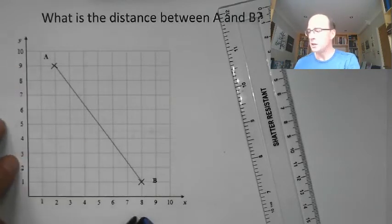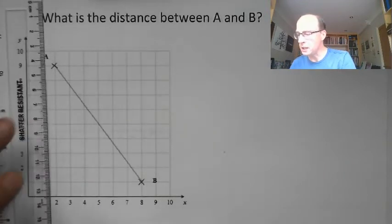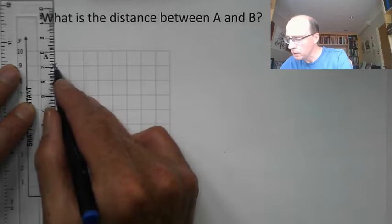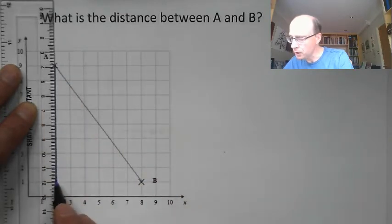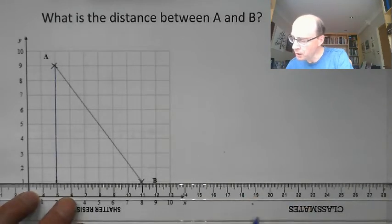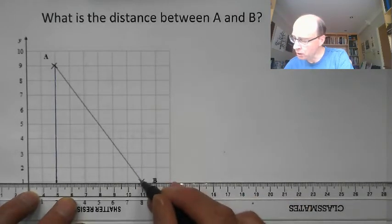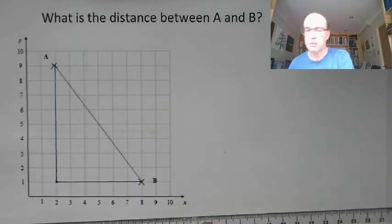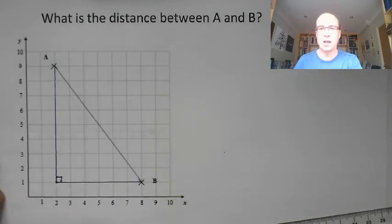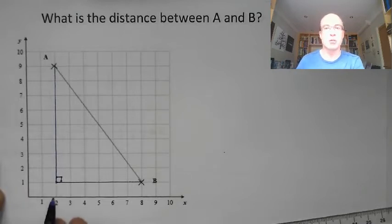So if I were to go straight down from my point A, get my ruler and mark it on, and I was to go across from my point B until those two lines join. There they go, they meet in the corner. I know that this angle here must be a right angle, because all of the lines of my grids are at right angles to each other.